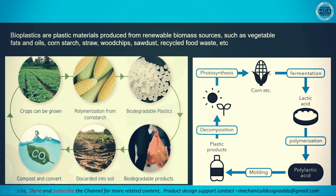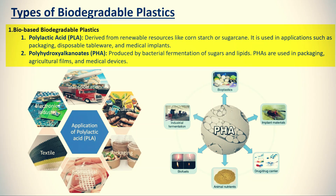Biodegradable plastics are generally derived from natural biomass sources. For example, from corn we get lactic acid, and through a polymerization process lactic acid becomes poly lactic acid (PLA). This PLA material is then used in a molding process to produce biodegradable plastic products. Once used, the material degrades and can also be used as compost to grow crops.